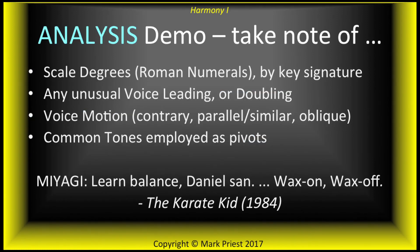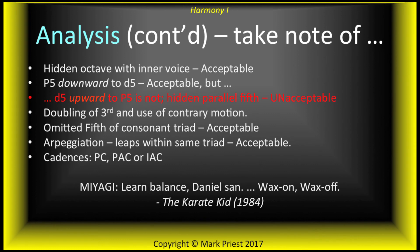We worked through a demonstration about how to analyze voice leading and harmony in written music. First, label the key. Indicate scale degrees of chord roots with Roman numerals. Note any unusual voice leading, such as a double leading tone whenever the seven chord is not followed by a one chord. Mention voice motion and any common tones used as pivots. Hidden octaves involving inner voices are acceptable. Downward movement from perfect fifth to diminished fifth is acceptable, but upward motion from diminished fifth to perfect fifth involves a forbidden hidden fifth. Mention any doubling of thirds and contrary motion, any omission of chord fifths or arpeggiation when permitted, and label all cadences.